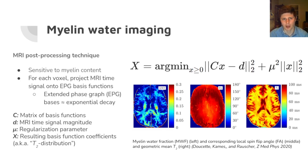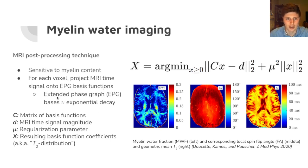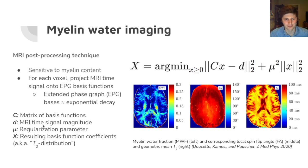These images come from something called myelin-water imaging. Myelin-water imaging is a post-processing technique which takes an MRI image and solves an optimization problem at each point in space to determine various maps that are sensitive to things like myelin content. For each voxel, what we do is project the MRI time signal onto a set of basis functions called EPG basis functions — standing for extended phase graph — which is an algorithm used to compute an MRI signal that is more or less an exponentially decaying function but with some additional MRI physics corrections. So what we have to solve is a non-negative least squares problem with Tikhonov regularization, where the matrix C is a matrix of these basis functions, D is the magnitude of the MRI signal, and mu is the regularization parameter that also has to be determined. What we get out is the coefficients for these basis functions, which are often referred to as T2 distributions in the literature.